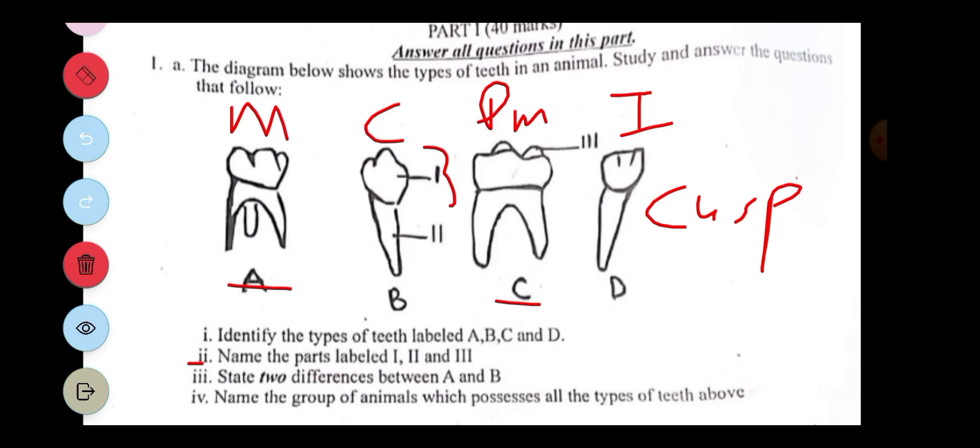The third question is asking us to state two differences between A and B. So A is a molar, B is a canine. The differences are very clear. The first one is that the canine has a pointed crown, but the molar has a lot of projections. Another one is that the canine has one root, or B has one root, and then A has three roots.